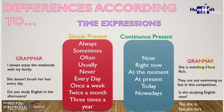Now let's analyze the grammar of the continuous present. Remember that here we are using the verb 'to be' in the present — am, is, are — after the subject, and also we are using the gerund with '-ing' on the verbs, so you need to be careful with the spelling rules. The positive example is: 'She is watching a nice flick' — 'Ella está viendo una película chévere.'